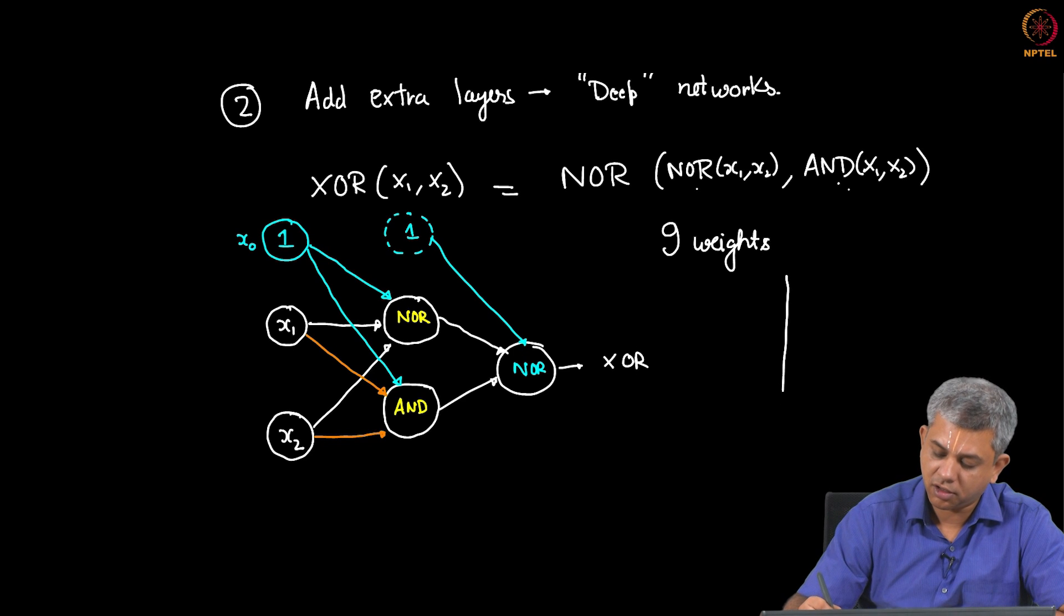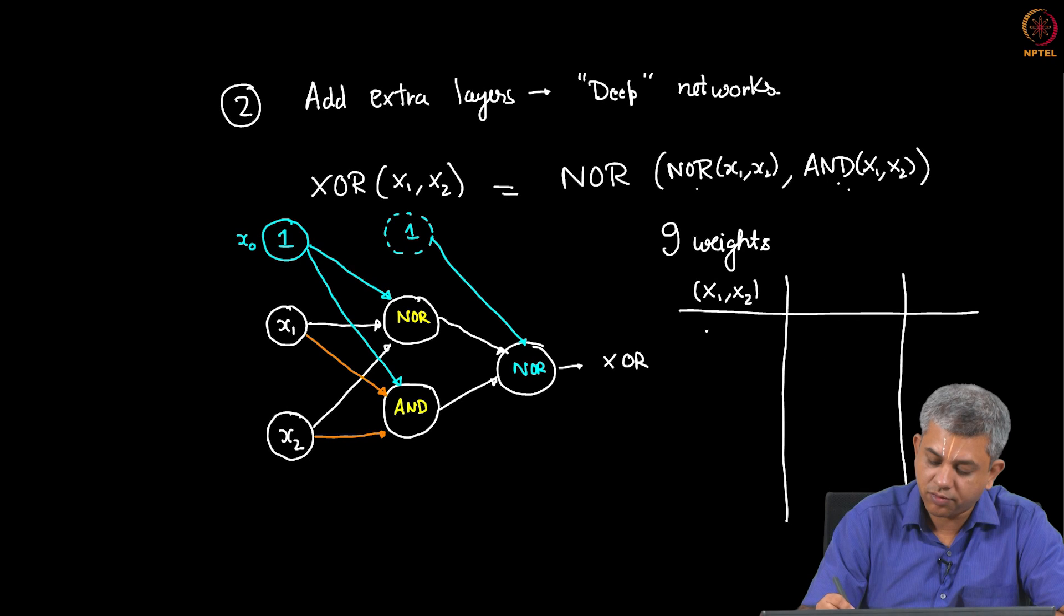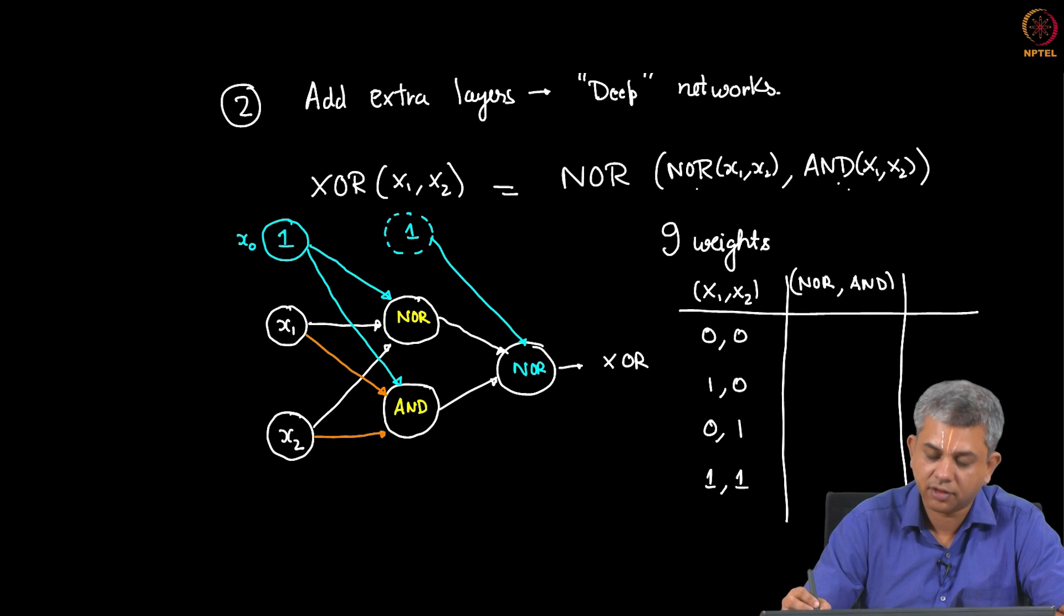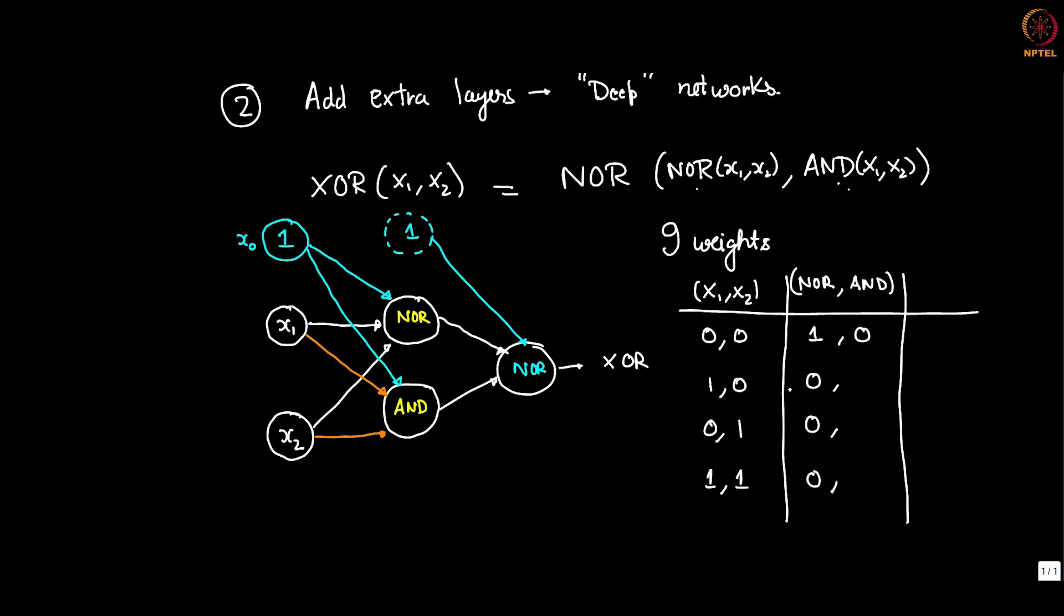I will show this to you quickly in a truth table so that you can convince yourself. X1, X2: 0,0, 1,0, 0,1, 1,1. I will just write both NOR and AND as output here. So NOR of 0,0 is 1, NOR of 1,0 is 0, this is 0, this is 0. The second one AND of 0,0 is 0, of 1,0 is 0, 0,1 is 0 and 1,1 is 1. Now if I do NOR again of this output, NOR of 1,0 is 0, 0,0 is 1, 0,0 is 1, 0,1 is 0, which is equal to the XOR here.